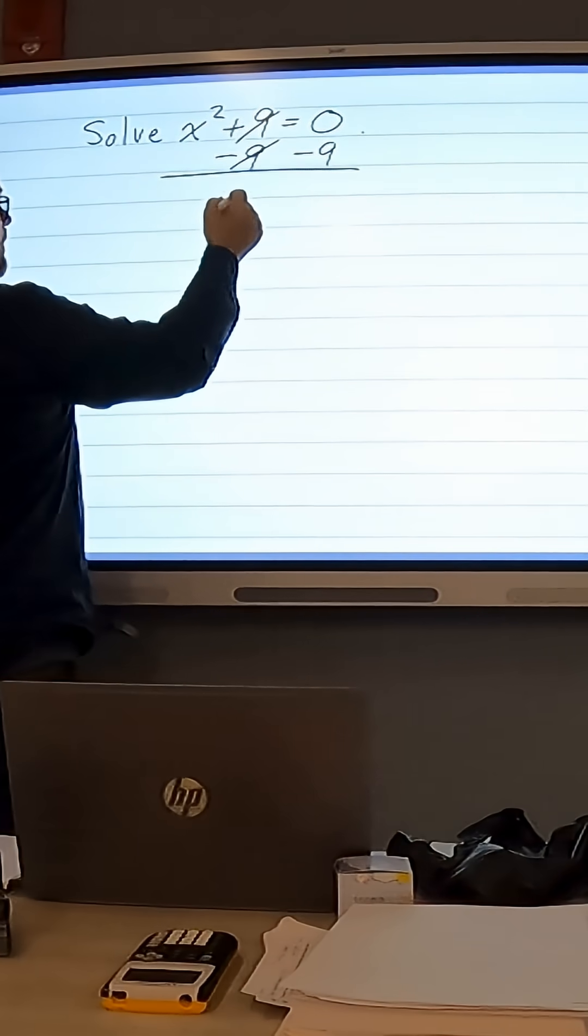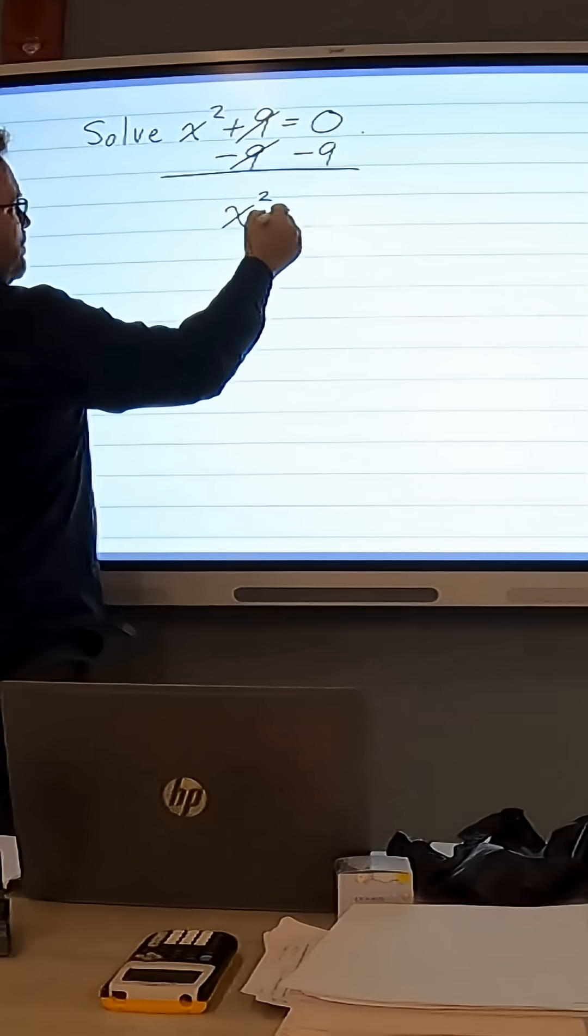And 9 minus 9 is 0, and I'm going to get x squared equals negative 9.